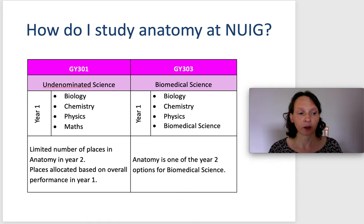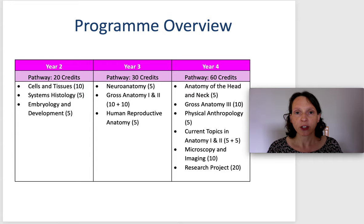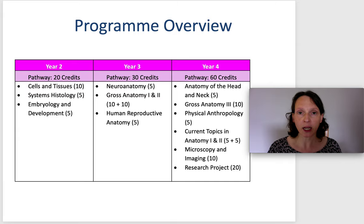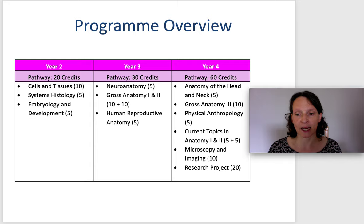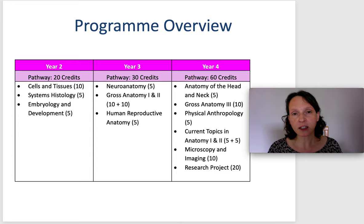Here is a brief overview of our program. In second year, students begin to study the organization of cells and tissues and are introduced to embryology and development. In third year, students begin studies of neuroanatomy, gross anatomy, and human reproductive anatomy. In year four, we continue the study of neuroanatomy — specifically the anatomy of the head and neck region — and students are introduced to various aspects of microscopy and imaging, alongside their independent research project.